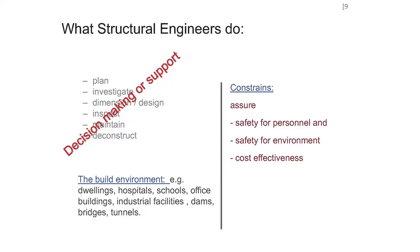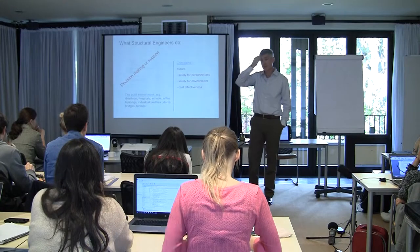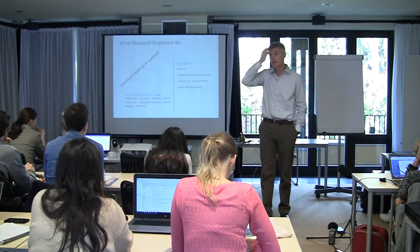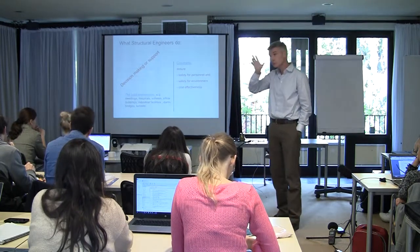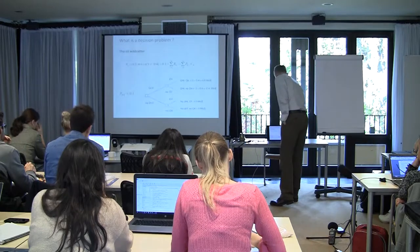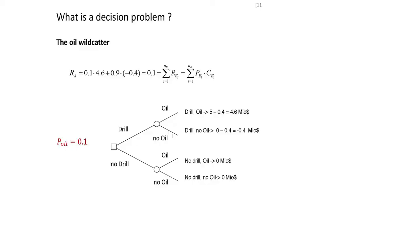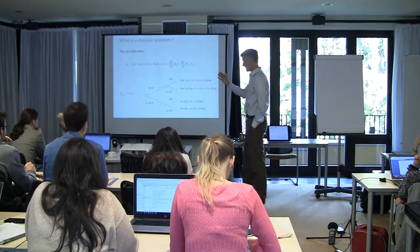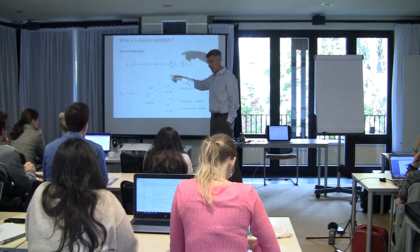We have to deal with uncertainties in this life cycle. We make decisions under uncertainty as engineers. Sebastian already told you about this objective function that includes criteria on the safety of personnel, safety of the environment, and economical constraints. This is what we build our objective function around. Of course, I come from Norway, I have to talk about oil. That's a classical decision problem. We already looked at the decision tree before, but this is a much more simple one.